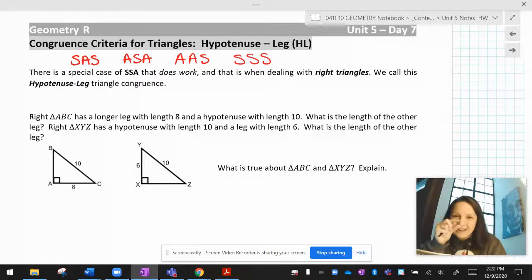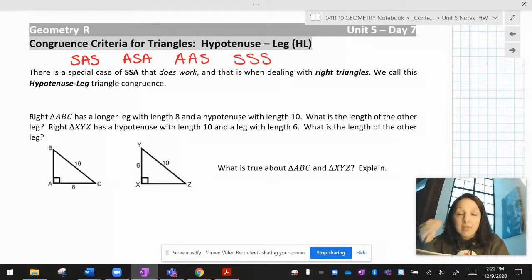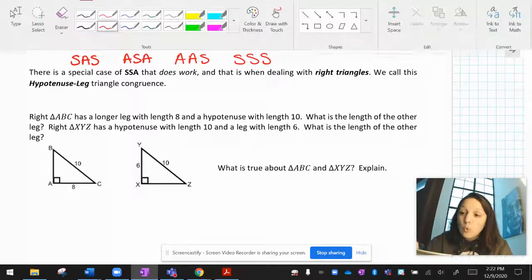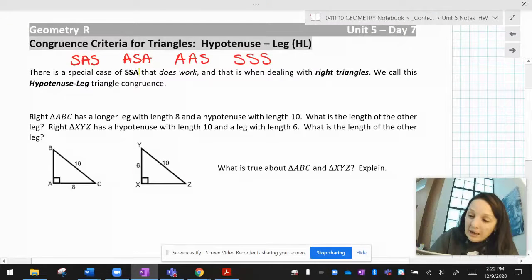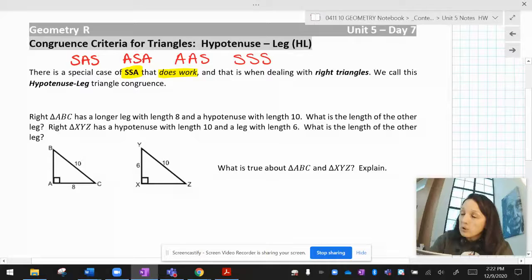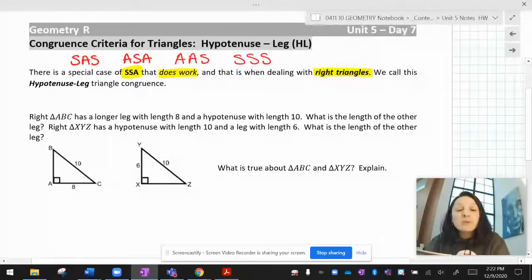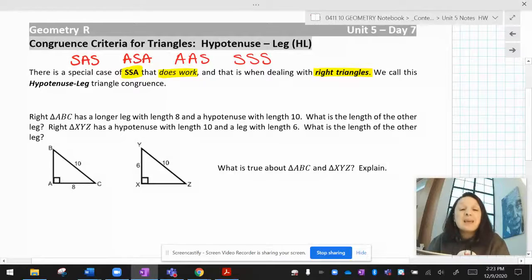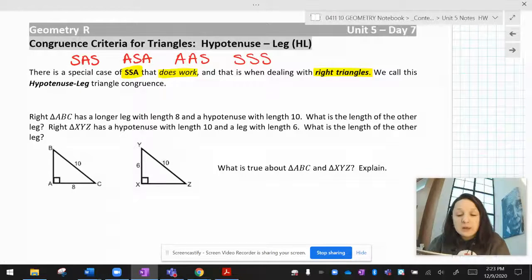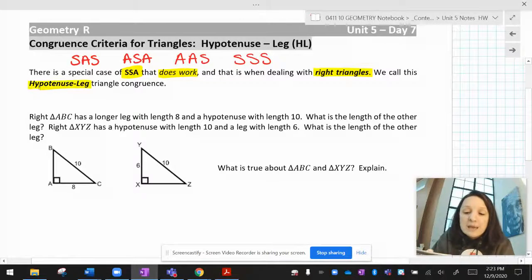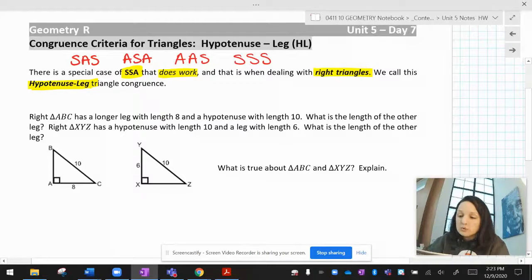Well, that's kind of lying to you just a little bit. SSA is not a thing unless your angle is a right angle. So SSA does work when you are finding right triangles that end up being congruent. And in that case, instead of calling it SSA, we call it HL or hypotenuse leg.